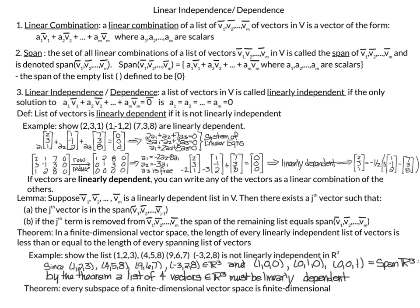The first example we will look at is the vectors (2,3,1), (1,-1,2), and (7,3,8), and we are going to show they are linearly dependent — meaning there is a non-trivial solution to the homogeneous equation. We set up: a1·(2,3,1) + a2·(1,-1,2) + a3·(7,3,8) = (0,0,0). This gives us a system of linear equations. We solve by taking our coefficient matrix concatenated with our solution and row reducing to get this matrix.